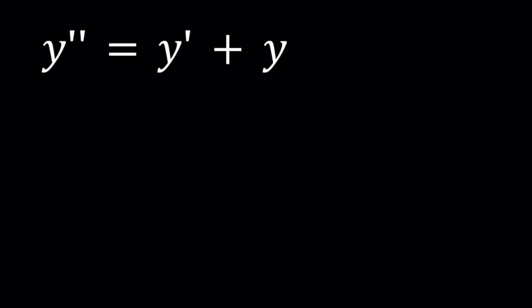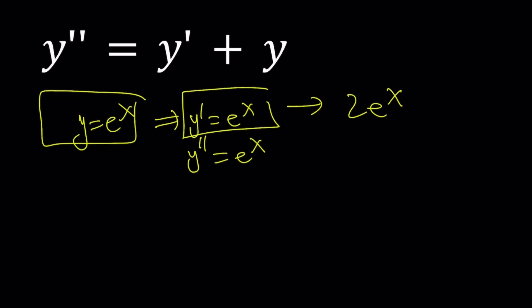We know that the derivative of e to the power x is the same thing, so can this be like e to the power x? Obviously, when you plug in e to the power x, and we're just experimenting here, you'll notice that first derivative is e to the power x, and second derivative is e to the power x. When we add the derivative and the function, the sum is going to give us 2e to the power x. Unfortunately, that's not going to equal the second derivative.